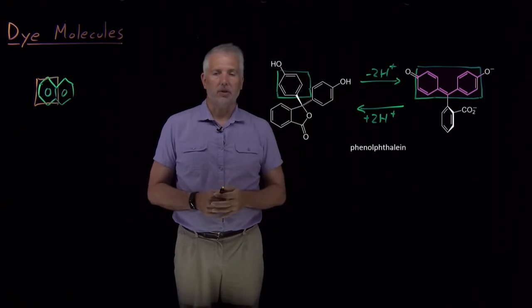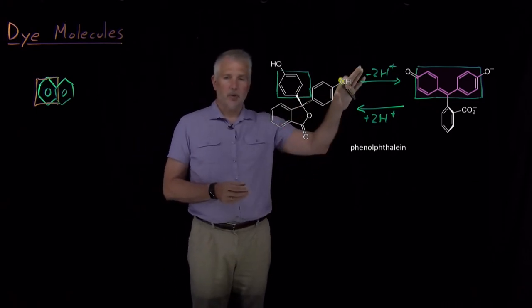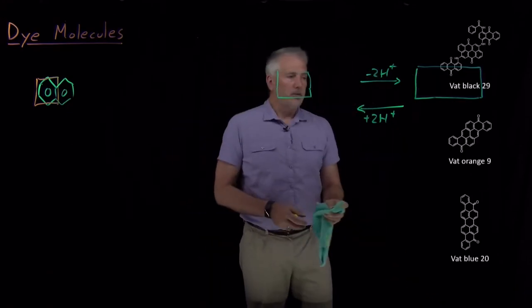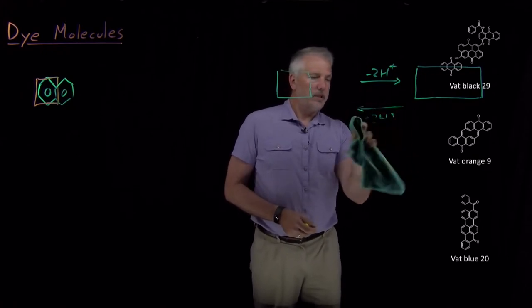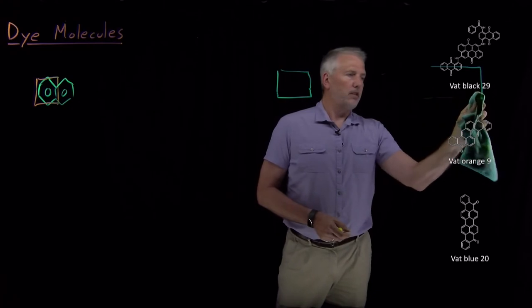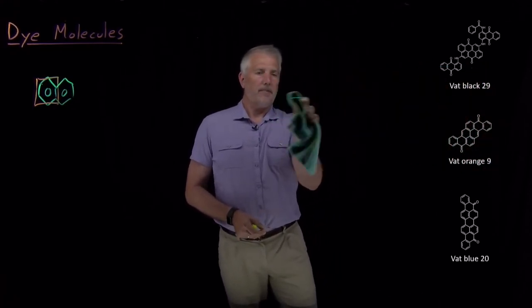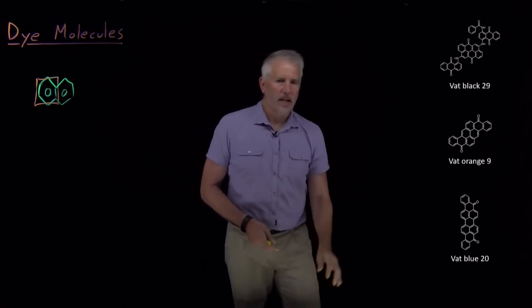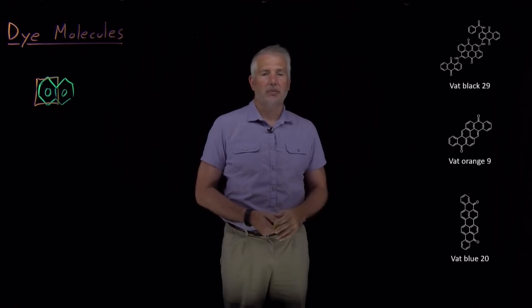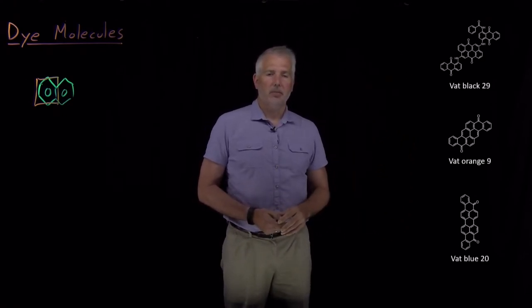As a different example, I can clear this picture away and bring up another picture with a list of molecules. We can talk about this collection of molecules over on the right-hand side. These are all dye molecules that could be used to dye clothes for example. The particular details are not important other than the fact that the molecules have different colors as indicated by their names.